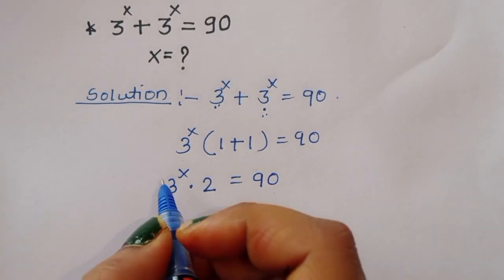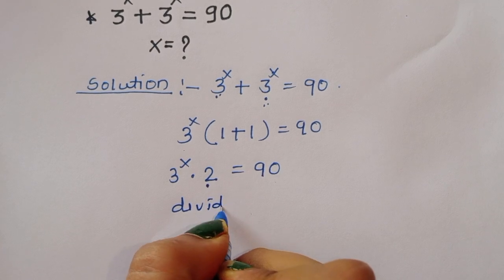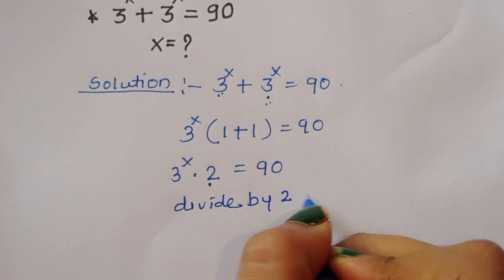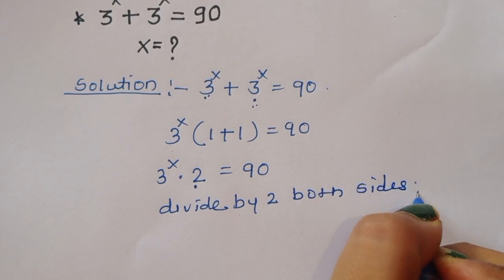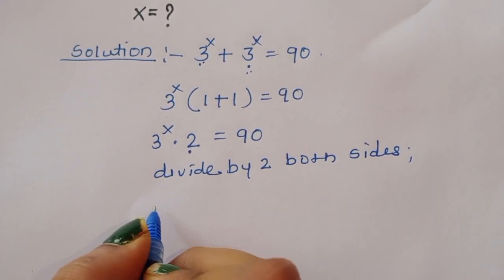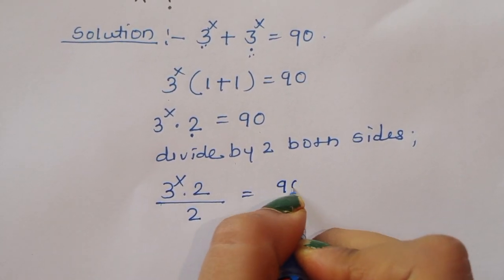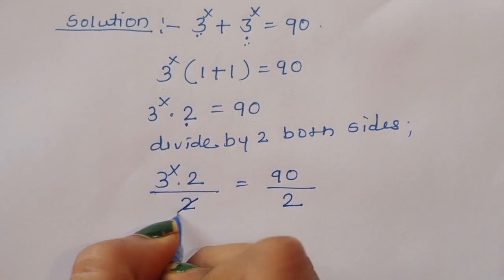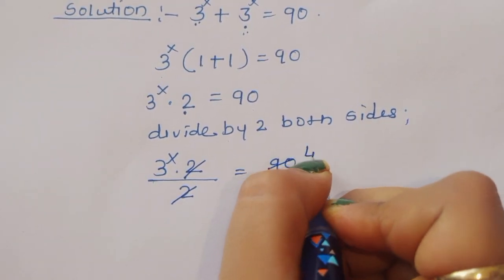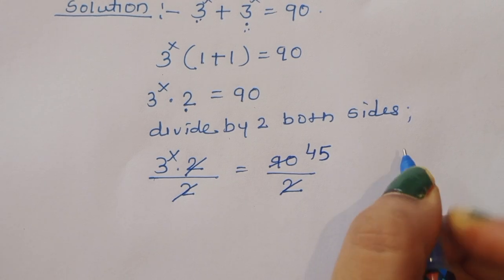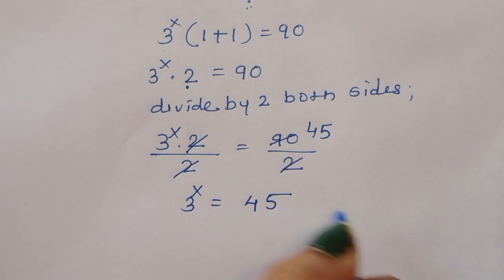Now 3 power x times (1 plus 1), which is 2, is equal to 90. Now you can see this is 2, so we can divide by 2 on both sides. Then we get 3 power x times 2 divided by 2 is equal to 90 divided by 2. The 2 cancels, giving us 45. So we get 3 power x is equal to 45.